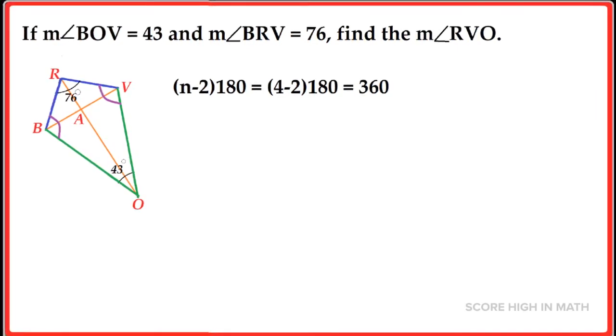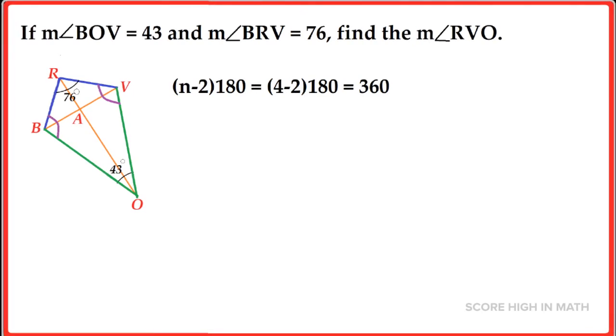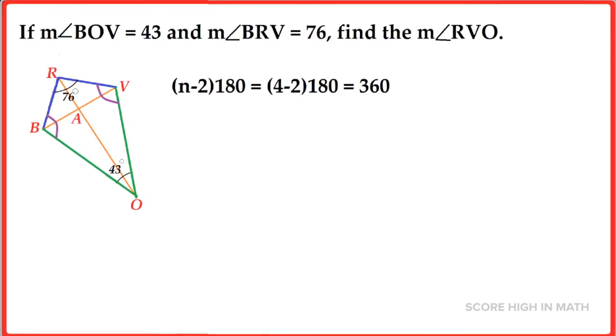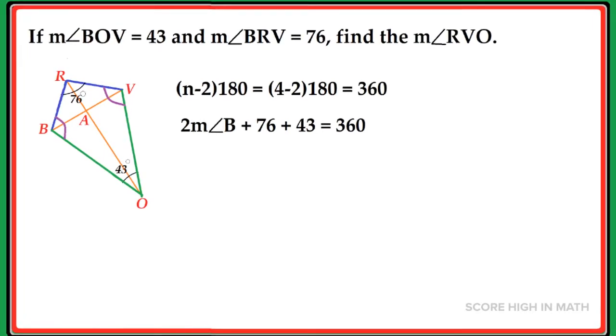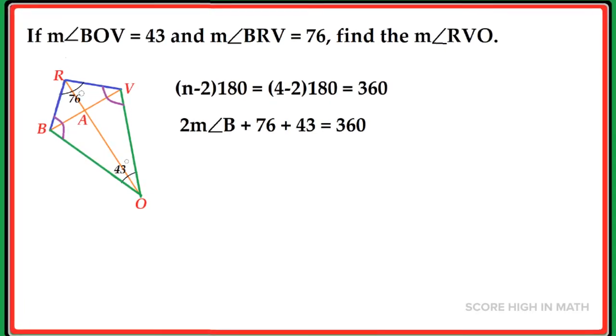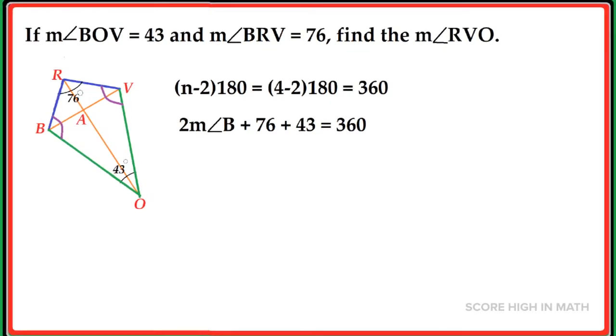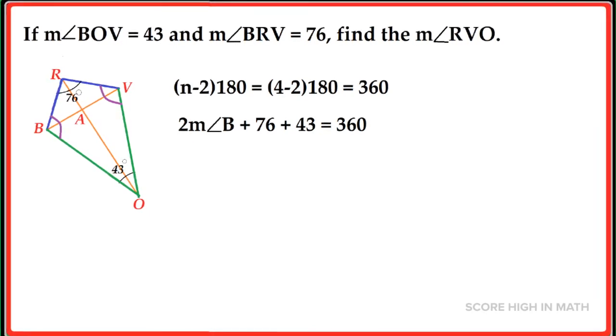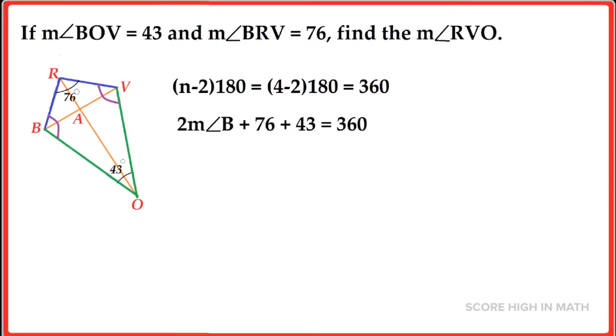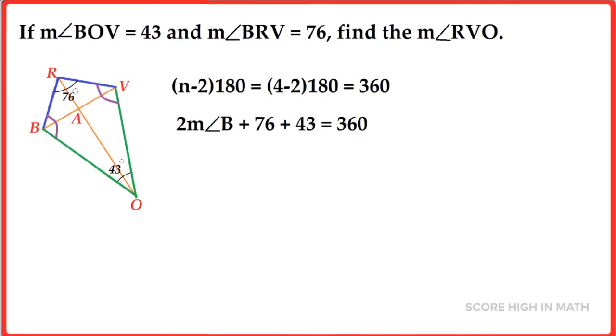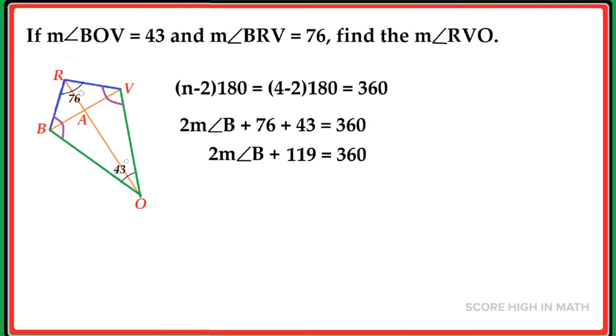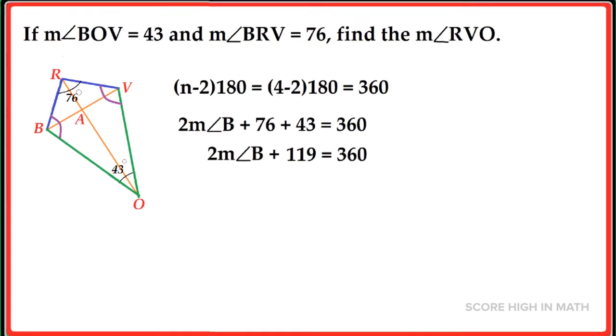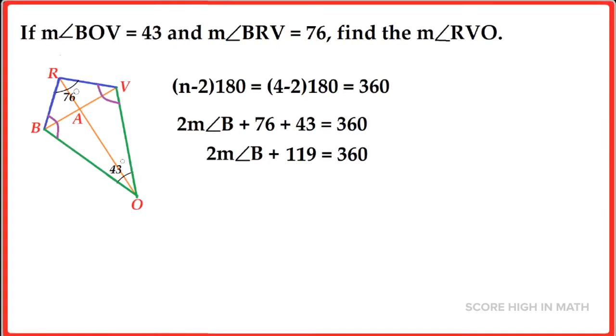So the number of sides minus 2 times 180, 4 minus 2 times 180, it will give us 360. Since the measure of angle B is also equal to the measure of angle V, we are just going to simplify the equation as 2 times the measure of angle B plus 76 plus 43 is equal to 360. To simplify, it will give us 2 times the measure of angle B plus 119 is equal to 360.